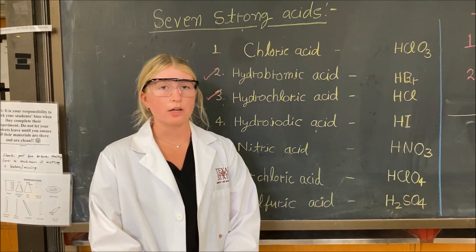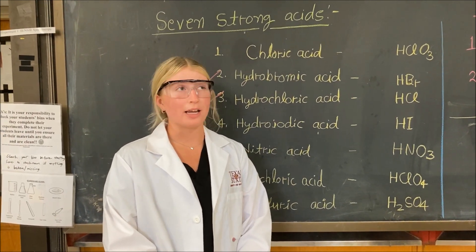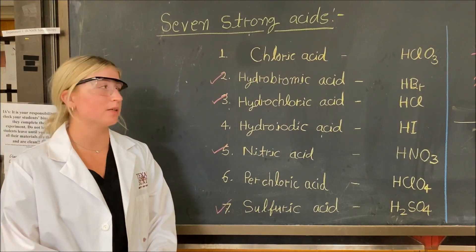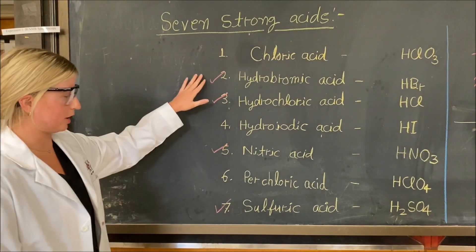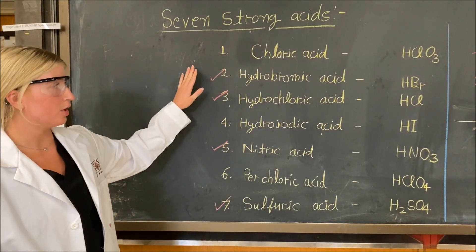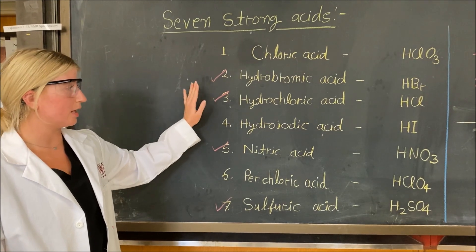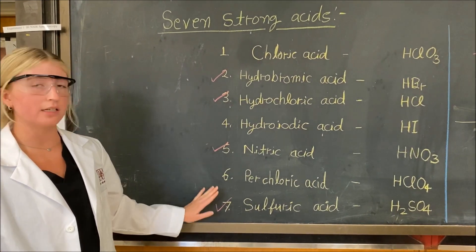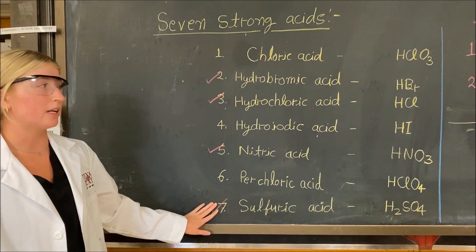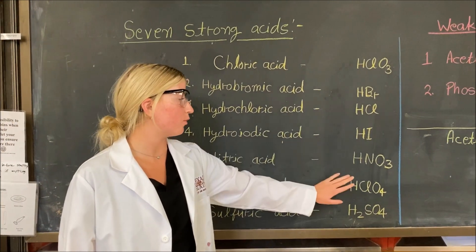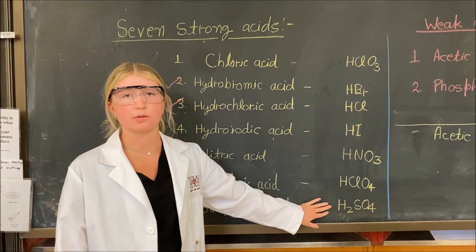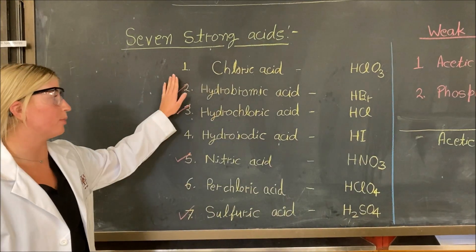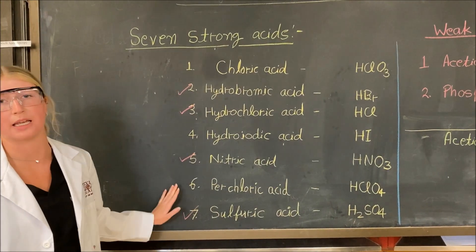For Organic Chemistry 1 and Organic Chemistry 2 labs, the four main strong acids you're going to be using are the checkmarked ones. You'll be using hydrobromic acid, hydrochloric acid, nitric acid, and sulfuric acid. You need to know their chemical formulas because that's what you'll see on the bottles and occasionally in your reactions, but your lab notebook will probably show the names.